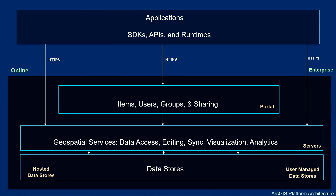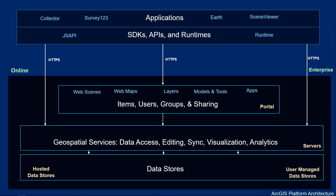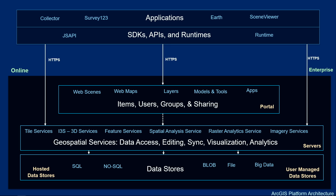Let's now look at the logical architecture of the ArcGIS platform. Applications use SDKs, APIs, and runtimes to work with web resources or items. These items, like web maps, layers, tools, dashboards, and application configurations, are powered by geospatial services for data access, editing, sync, visualization, and analytics. And these services access data from a variety of data stores, both hosted and user-managed.